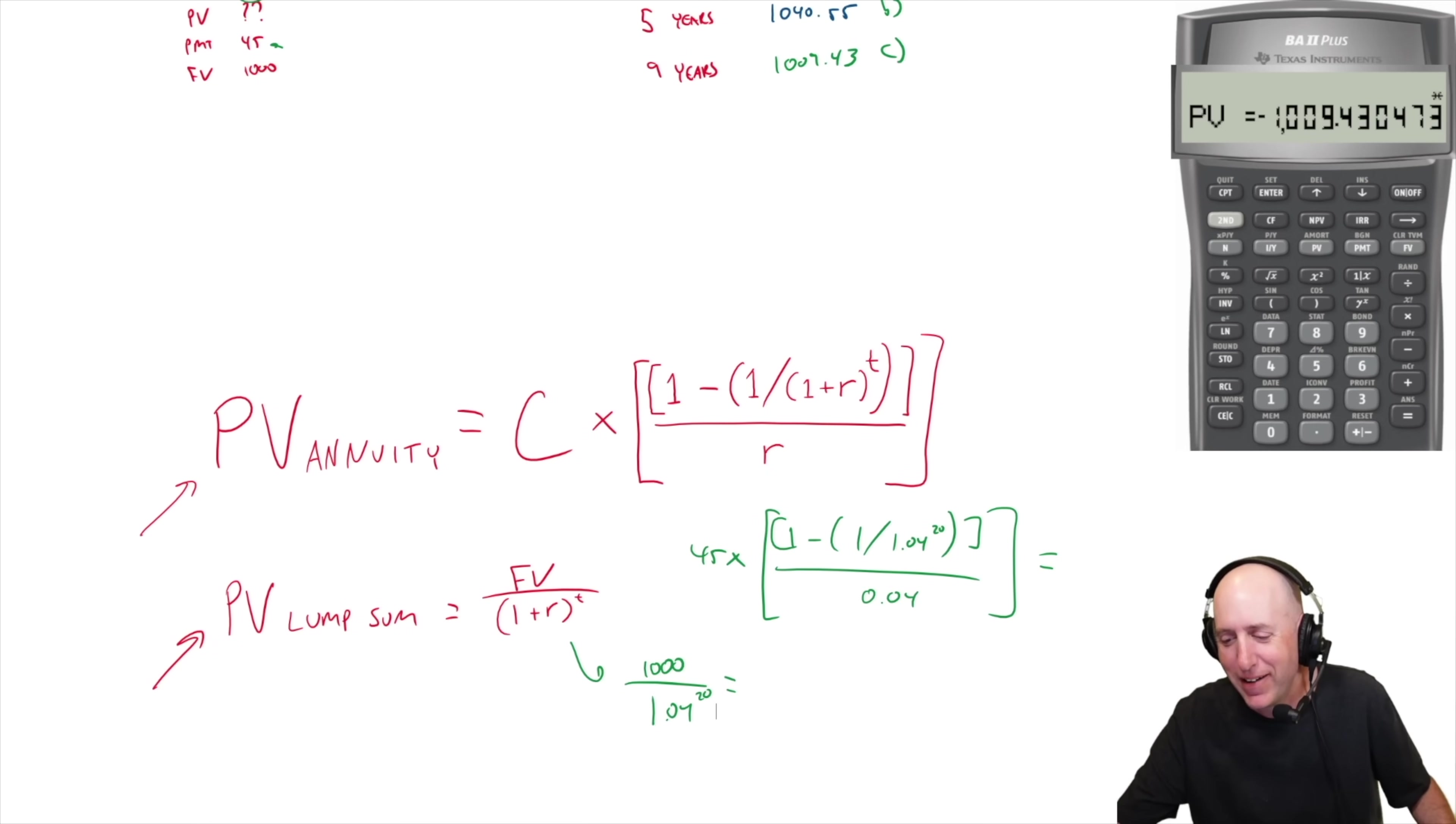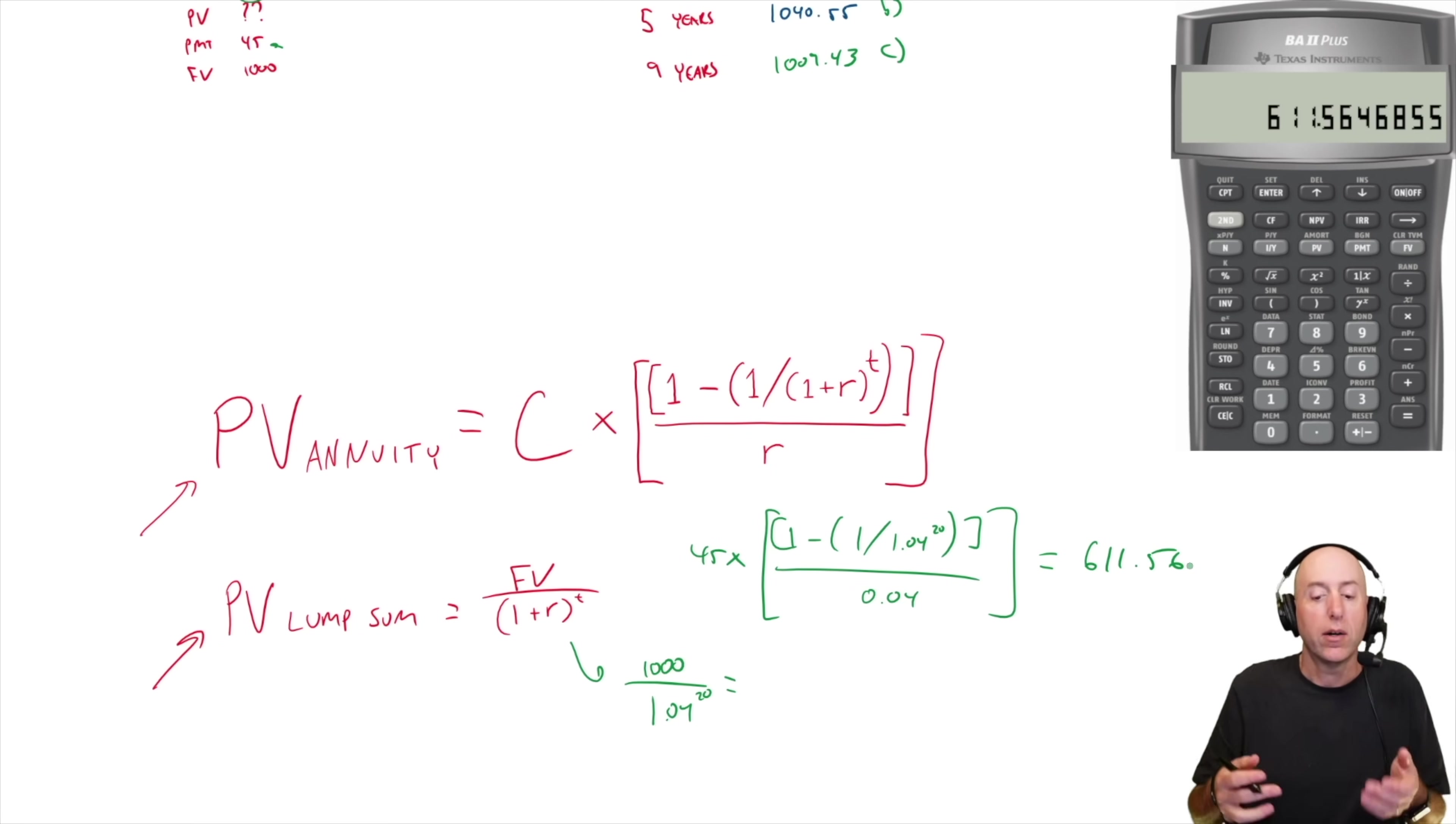Let's crunch our numbers. 1.04 to the power of 20 is 2.19. 1 over 2.19, so I go 1 over X, then I go 1 minus that answer. So minus 1, 0.54, divide by 0.04. I get 13.59 times 45, 611.56 is the present value of the interest.